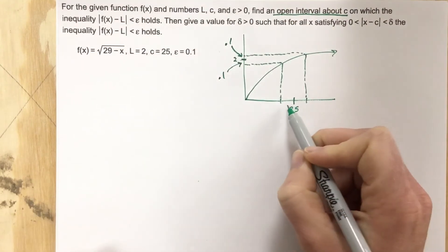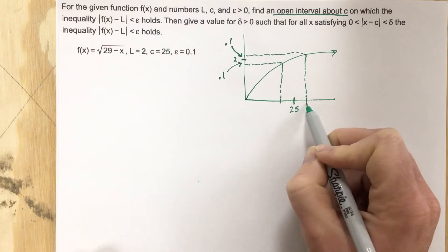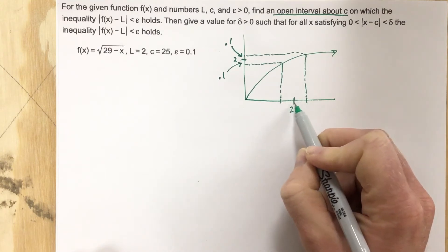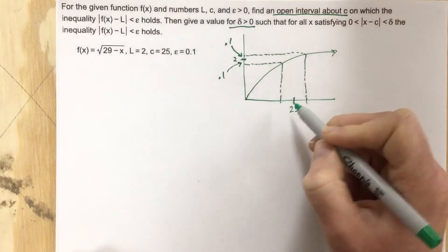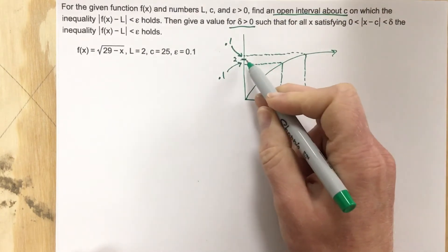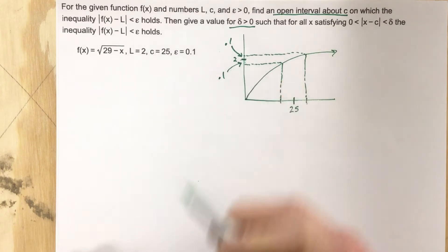So they want us to find the gap here, or the interval from here to here that's around this 25 mark, and then they want us to state the delta that we would need to use to make sure that we're staying within our tolerance of 0.1 up there.